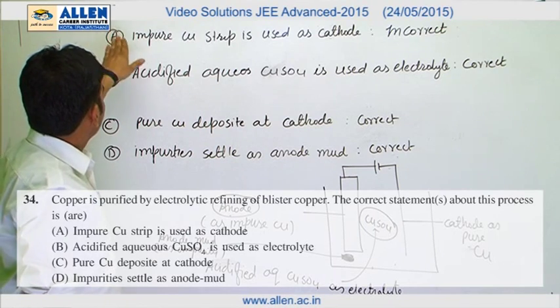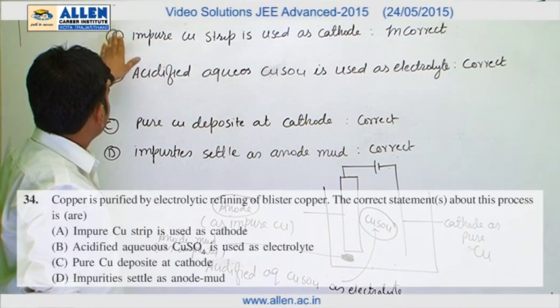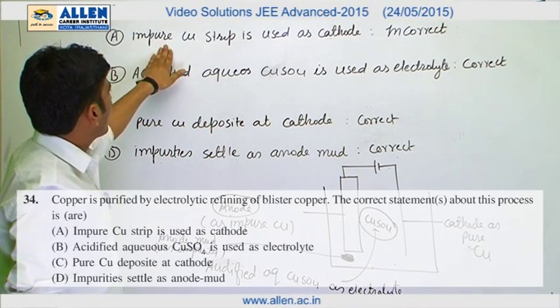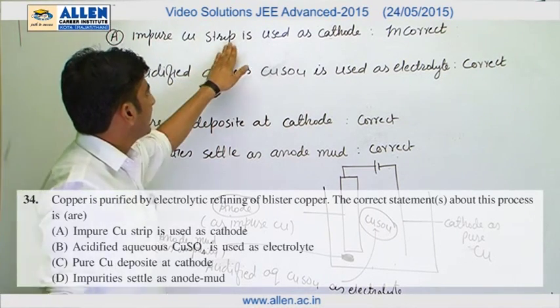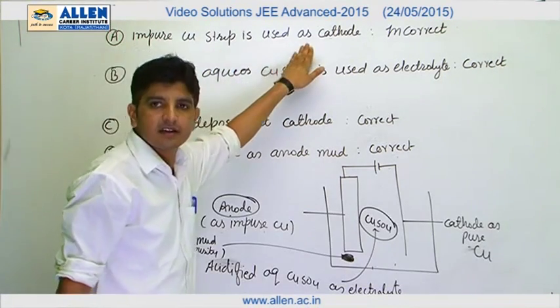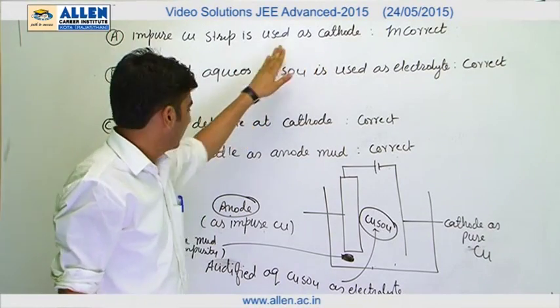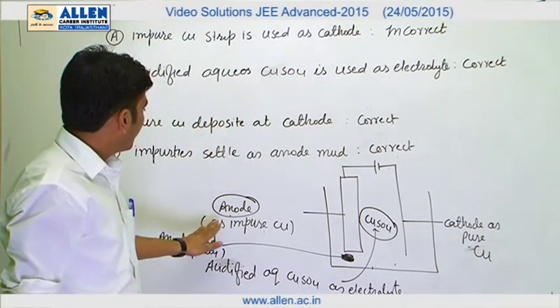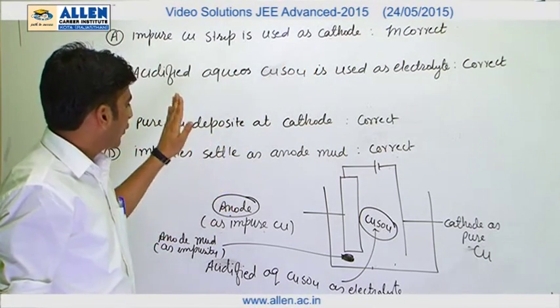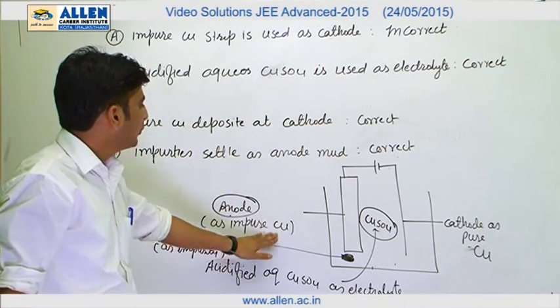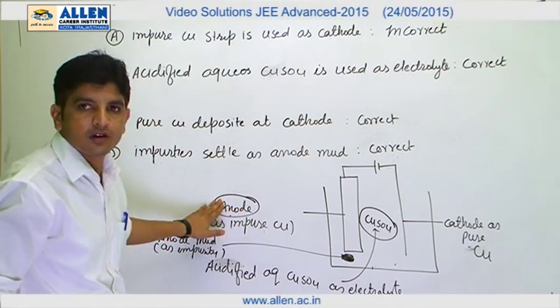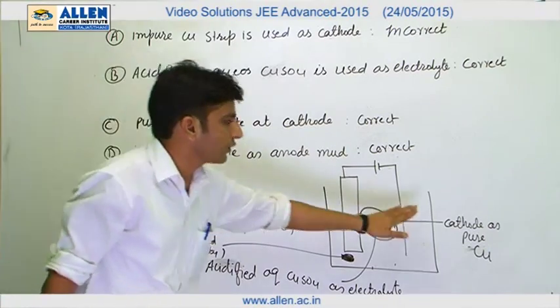Question No. 34. Statement A: Impure copper strip is used as a cathode. This statement is wrong. Impure copper strip is used as anode, not a cathode.